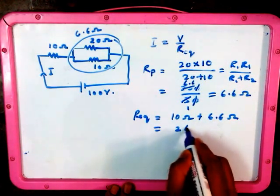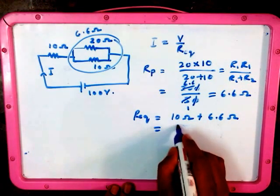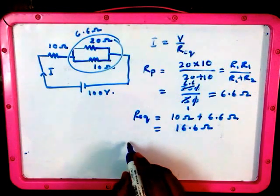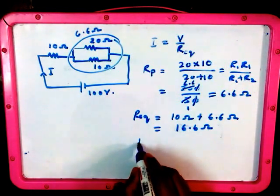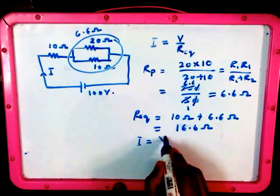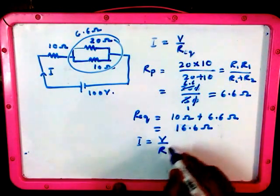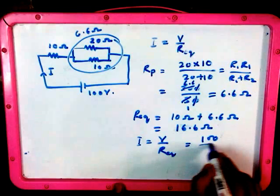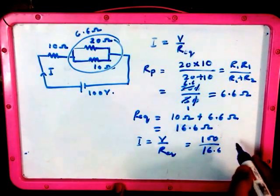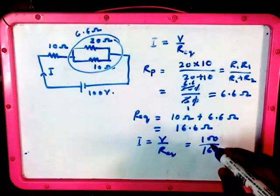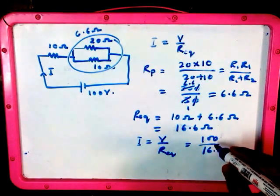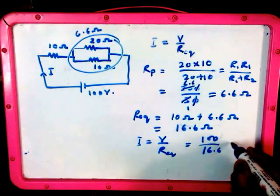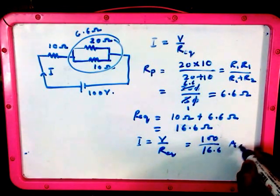Therefore we have the formula I is equal to V divided by R. Substituting the equivalent resistance value, 100 divided by 16.6 is the current we get. So if you find out the resistance value, you get the current in ampere, 100 divided by 16.6.